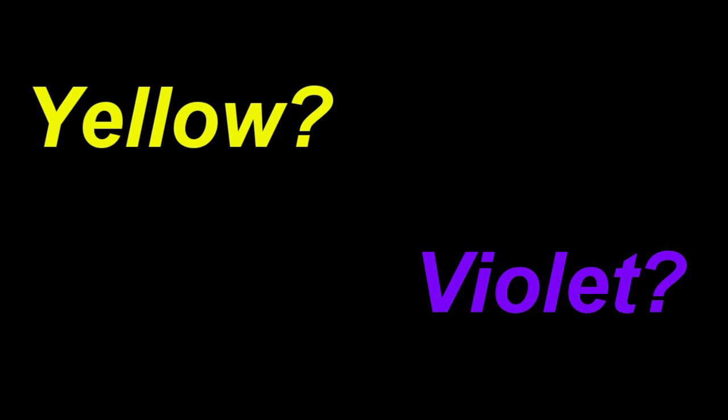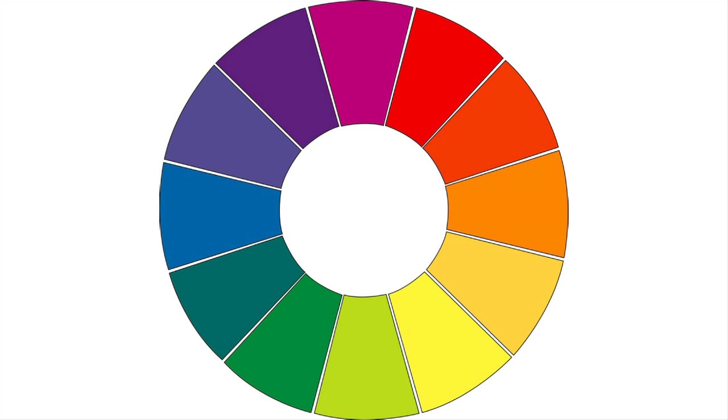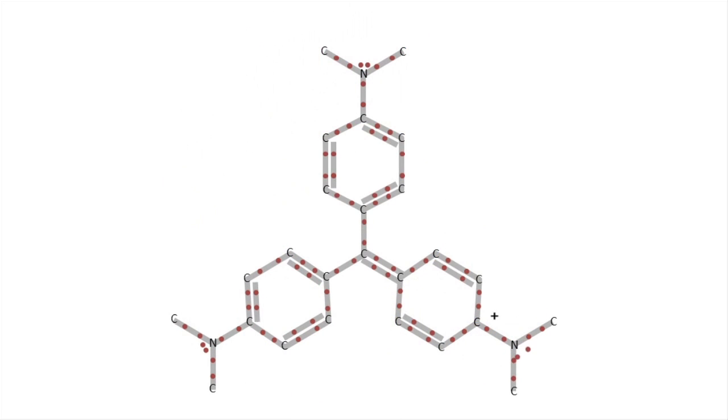Well, we don't see the color the solution absorbs. We see the colors the solution doesn't absorb. And generally, we will see the complementary color of the color the solution absorbs the most. And the complementary color of yellow is violet. Now that we know why crystal violet is violet, and how we can measure just how violet it is, we're ready to explore how to decolorize it.